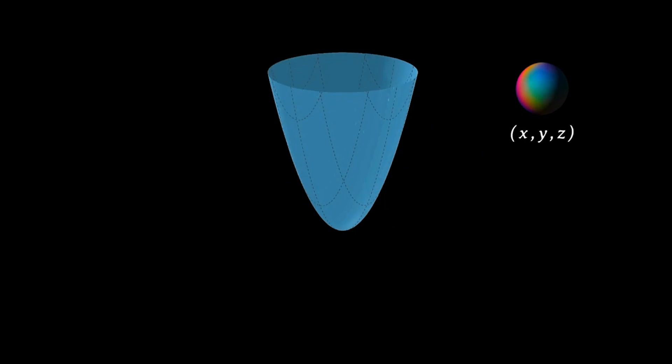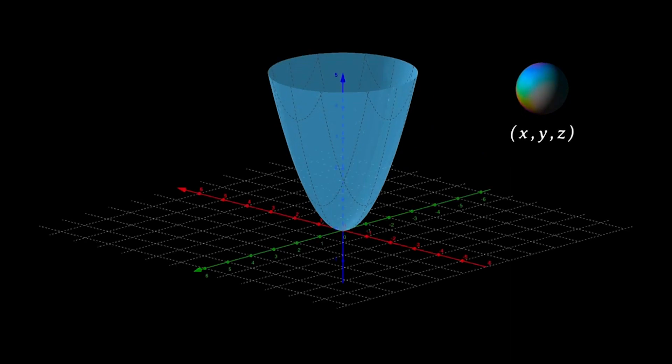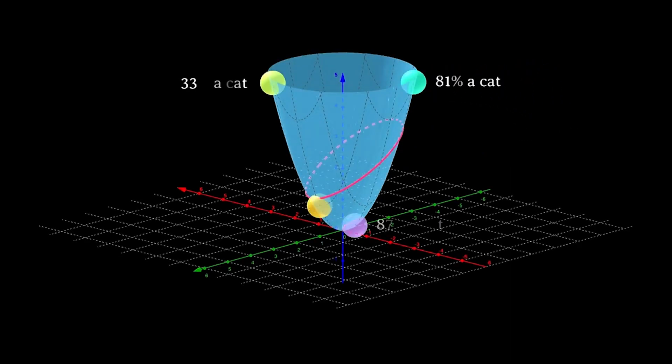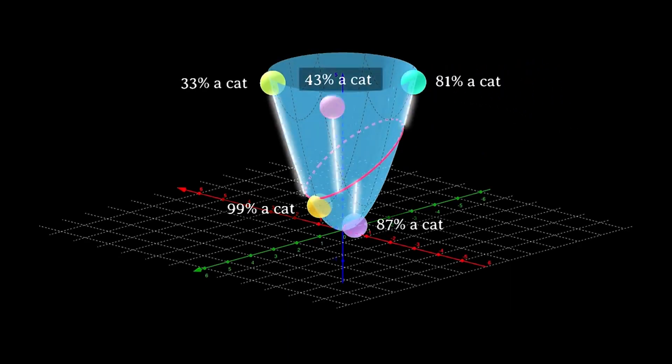We can do the same thing with images. Imagine an image of 3 pixels with intensities x, y, and z. We could have a function that classifies these images as likely a cat or not a cat, based on their distances from this ideal red line.